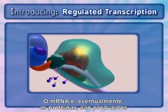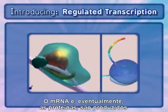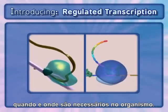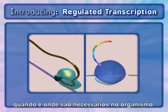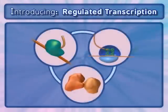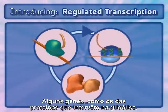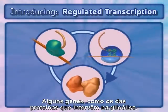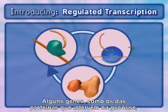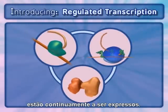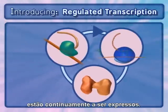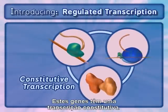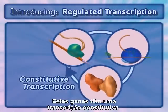mRNA and eventually proteins are produced when and where they are needed in an organism. Some genes, such as those for housekeeping proteins in processes like glycolysis, are expressed all of the time. These genes undergo what is known as constitutive transcription.